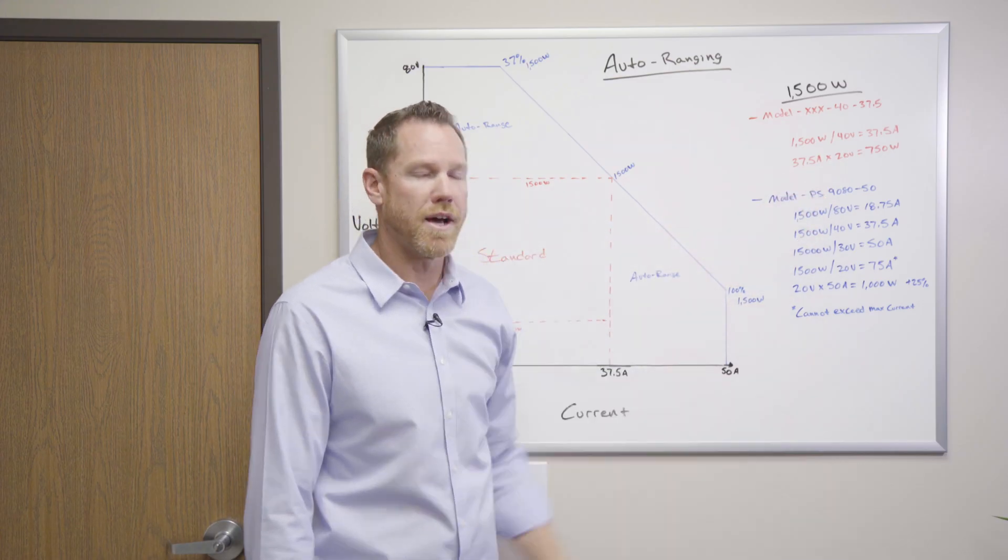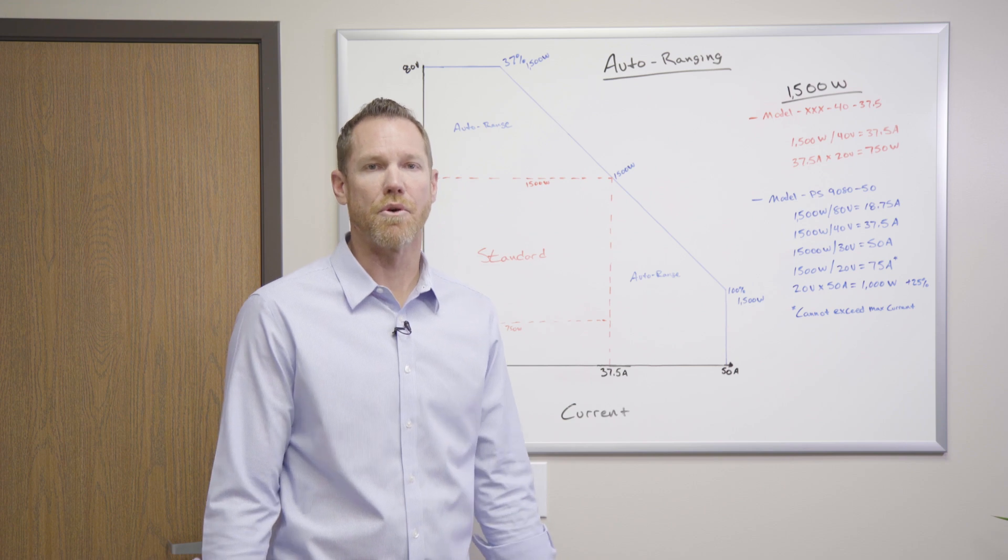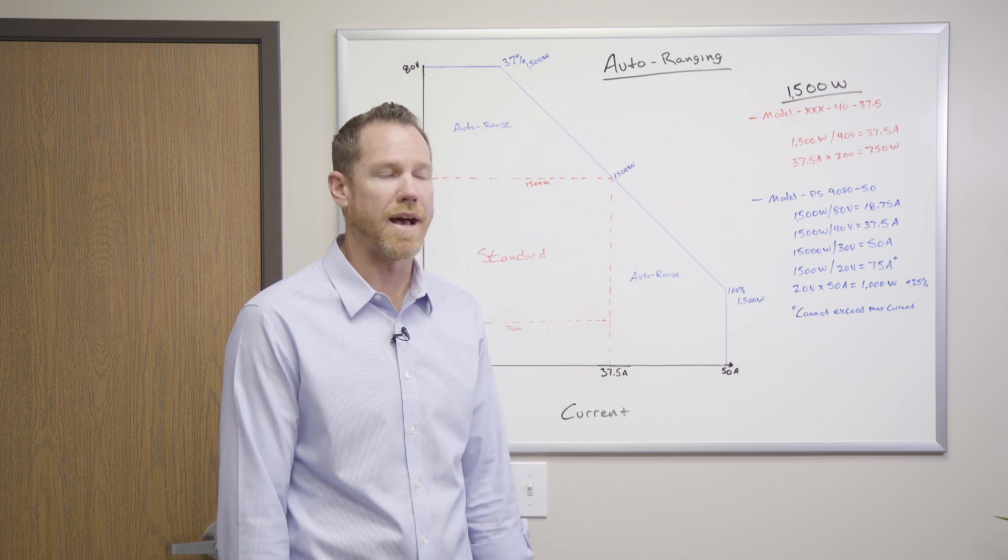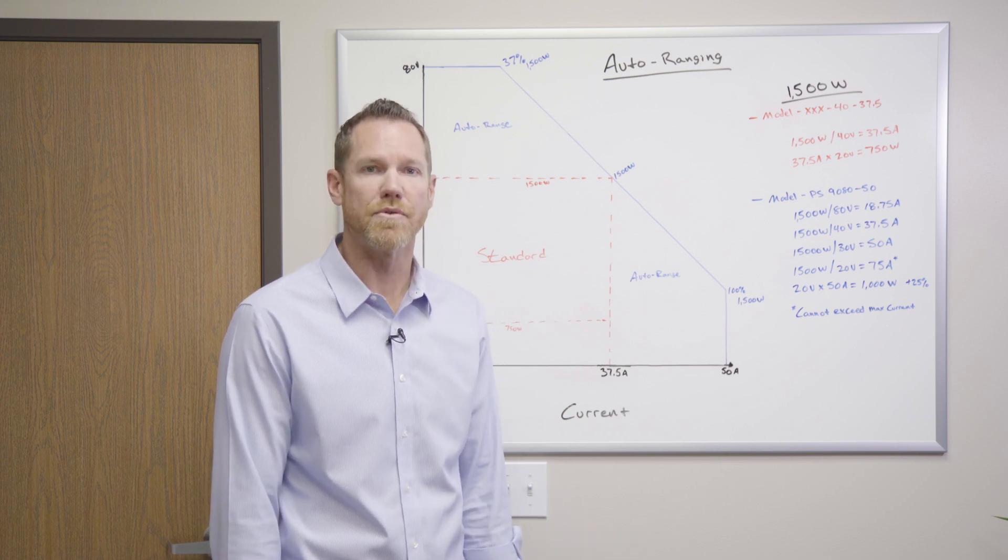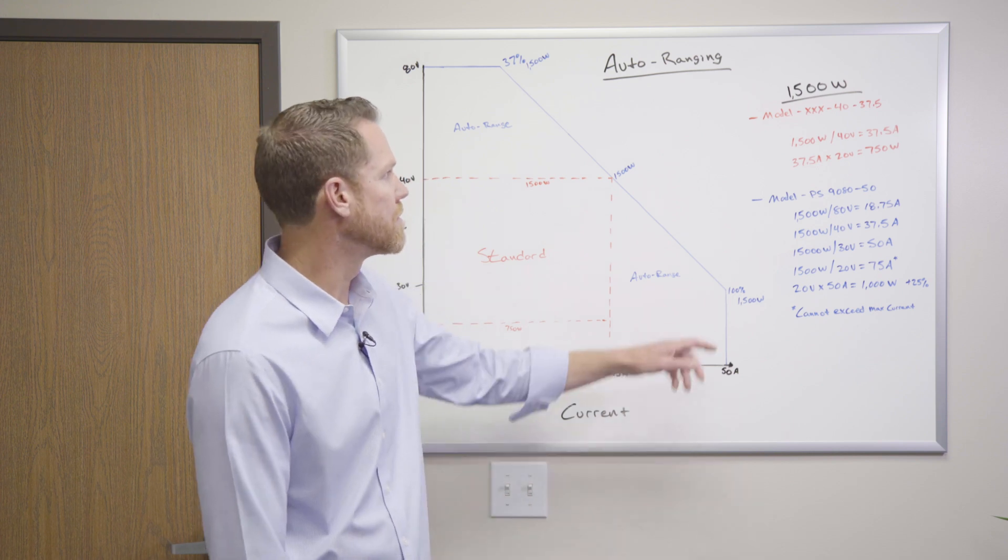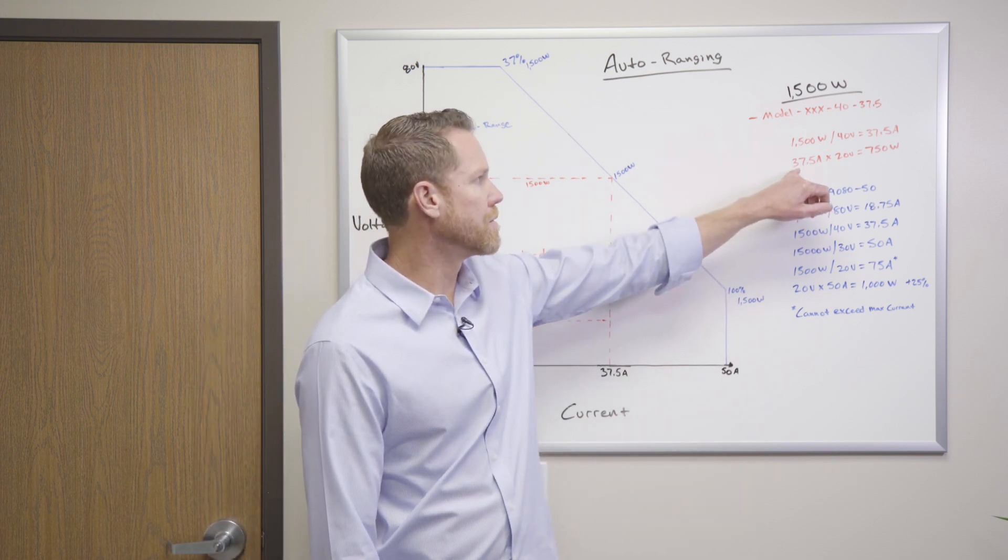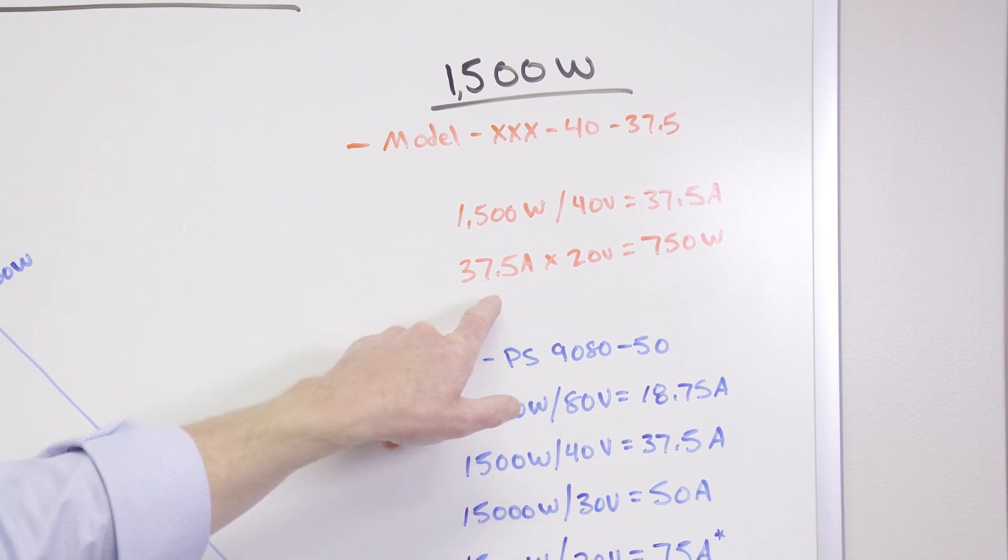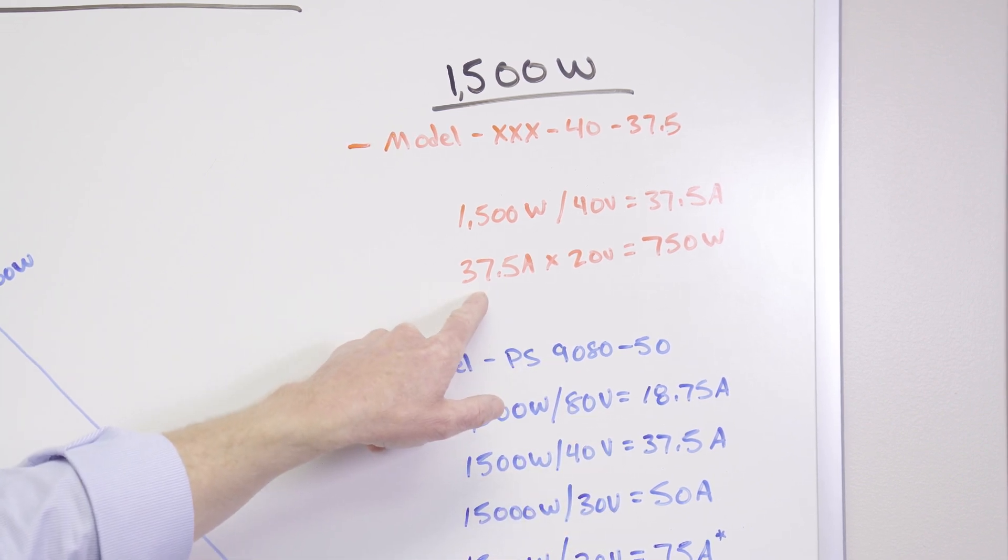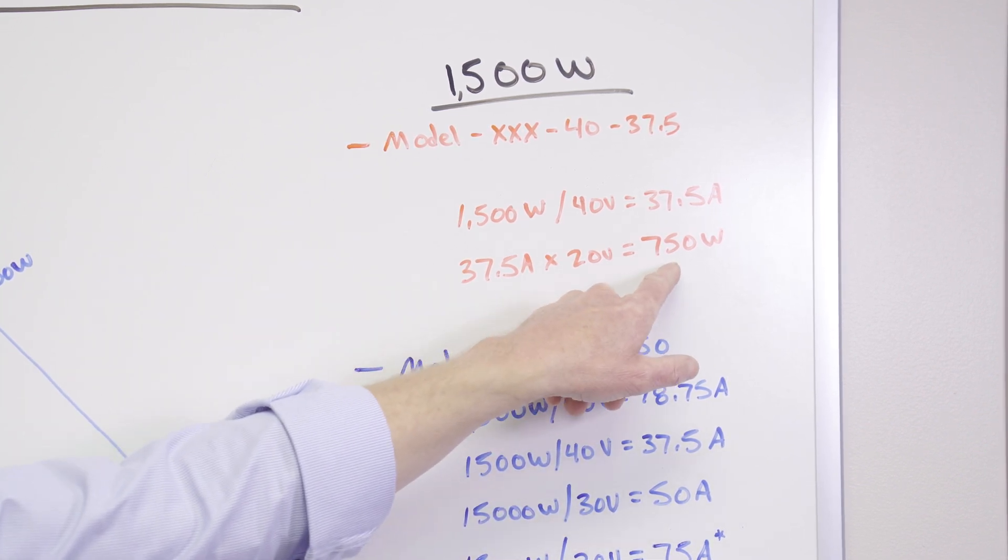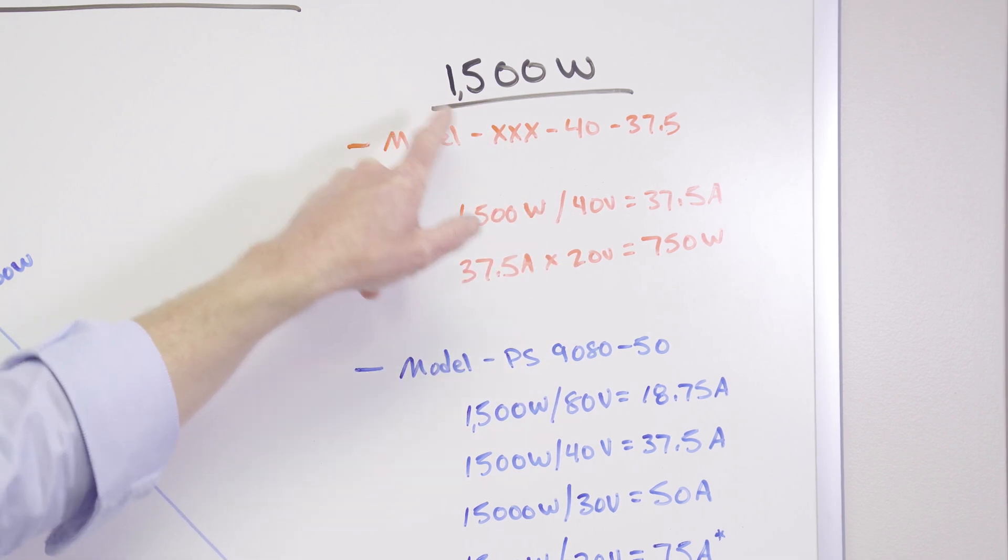Now, what the challenge that engineers run up against is how often are you really programmed at 40 volts? Maybe your application is avionics, say 28 volt is a common bus voltage within airplanes. So you program down to 20 volts, you still maintain the same 37.5 amps, and your power supply that you bought at 1500 watts is actually only delivering 750 watts.